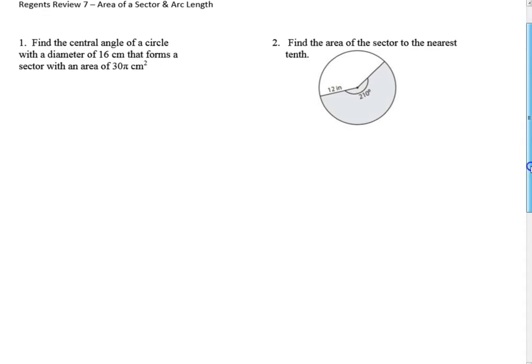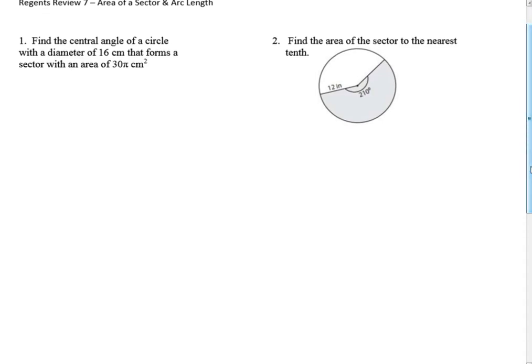When you have a circle, we're looking at the area of the sector, and it's a fraction of the total area. Here's the proportion that you can set up to help you solve this: it's the central angle over 360 equals the area of the sector divided by the total area of a circle, and that would be pi r squared.